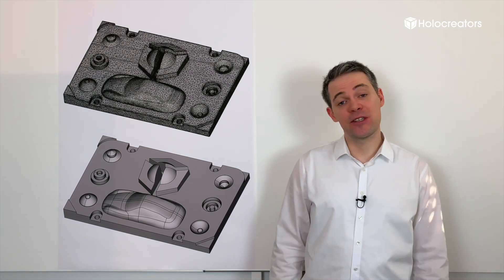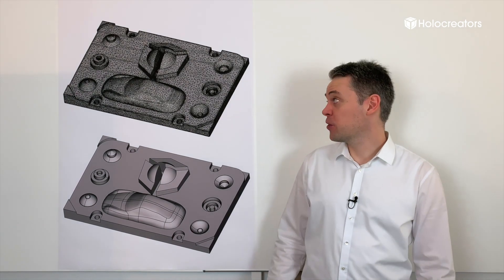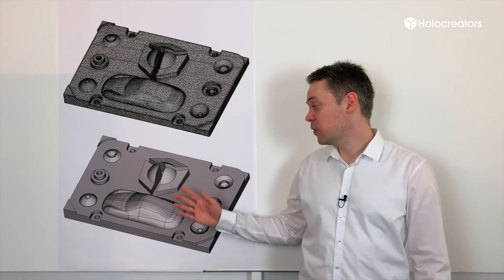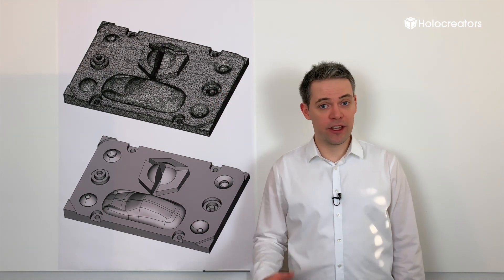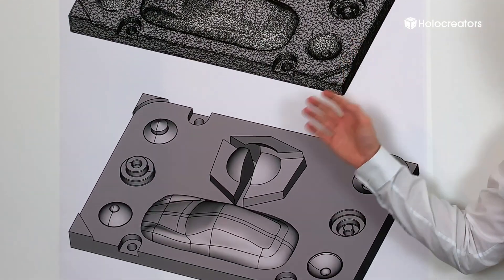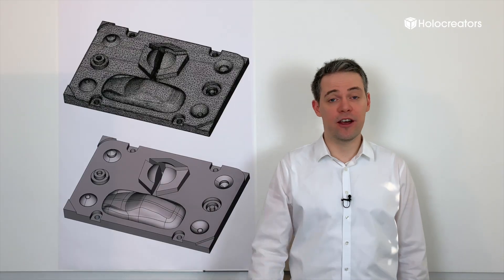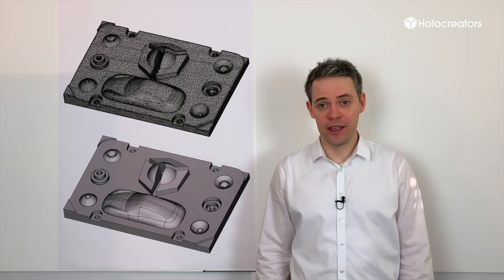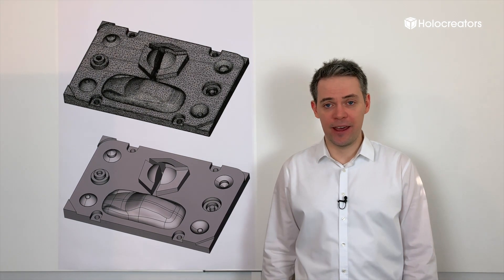With reverse engineering and solid modeling we can convert a 3D scan into a solid model. The goal here is to have the smallest possible deviation between the 3D scan and the solid model. The goal is not to optimize the part, but I will talk about that a bit later.